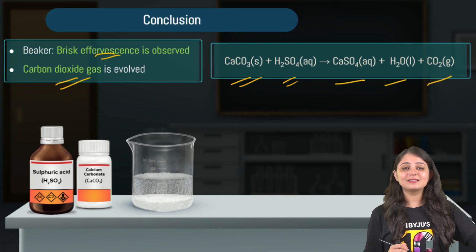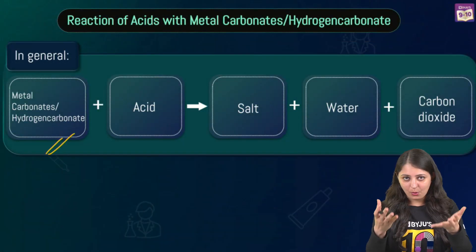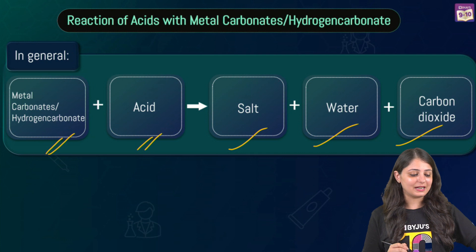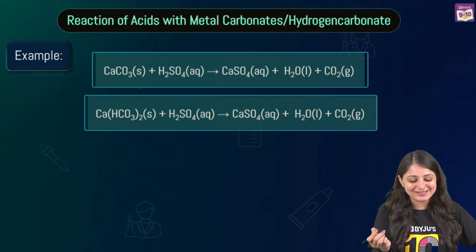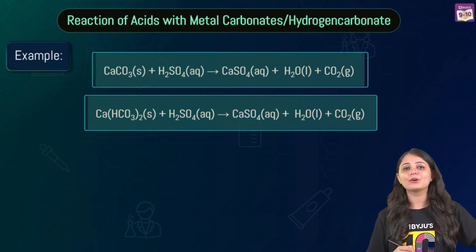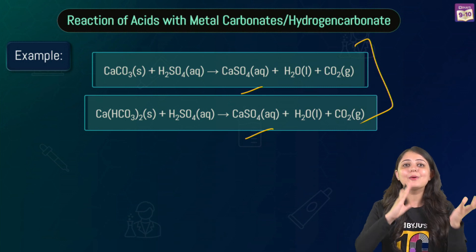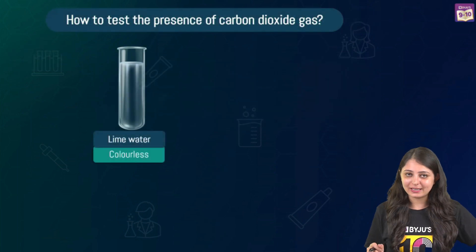In general, metal carbonates and bicarbonates (hydrogen carbonates) react with acids to give salt, water, and carbon dioxide. For example, calcium carbonate reacting with sulfuric acid gives calcium sulfate + water + CO₂. Similarly, calcium bicarbonate reacting with sulfuric acid gives calcium sulfate + water + CO₂. The products are the same in both cases, but balance the equations to understand the difference in amounts.